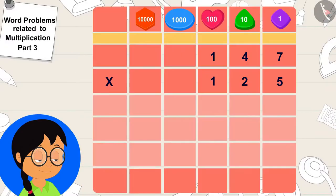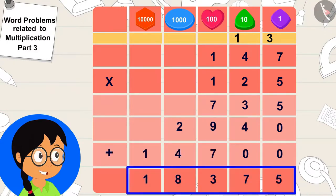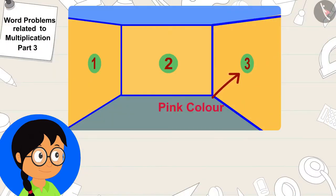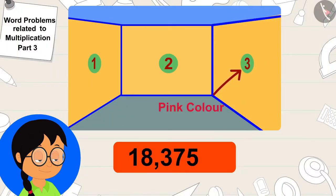Meenu quickly found the answer by multiplying it this way. It will take 18,375 rupees to paint this wall. Meenu told Bablu.